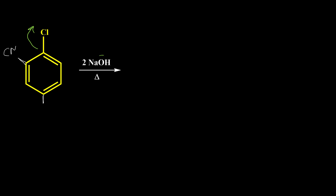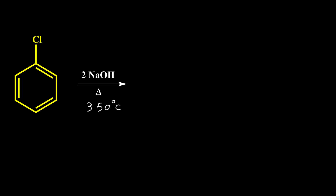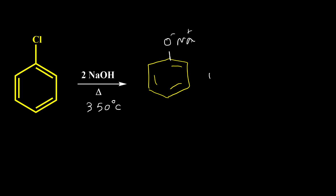But when we don't have this electron-withdrawing group, performing this reaction is a lot harder and we may need harsher conditions. For example, we need to perform this reaction at 350°C. It is observed that at this temperature we get phenoxide anion and sodium chloride. Acidifying the phenoxide anion causes formation of phenol, so when we add acid, the O⁻ converts to OH. This reaction happens through the elimination-addition mechanism and causes formation of benzyne intermediate.